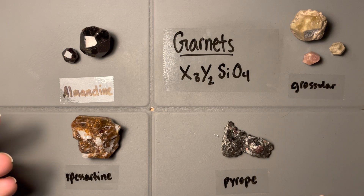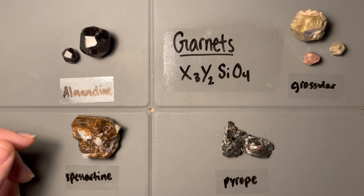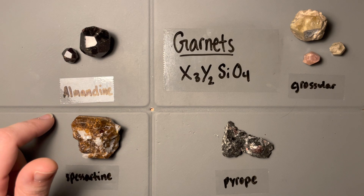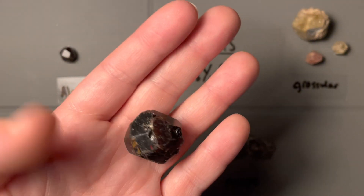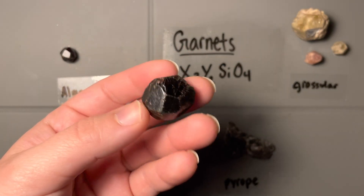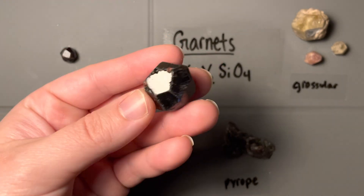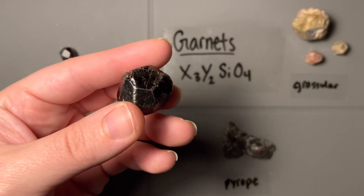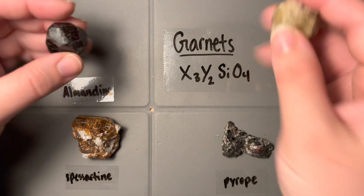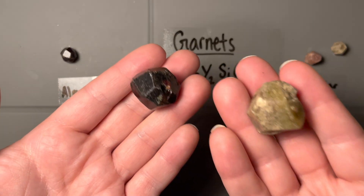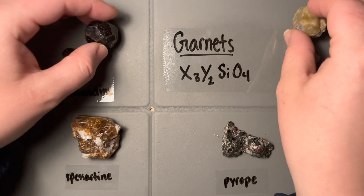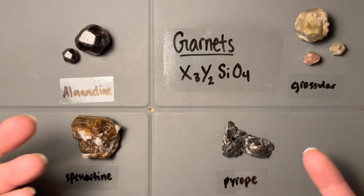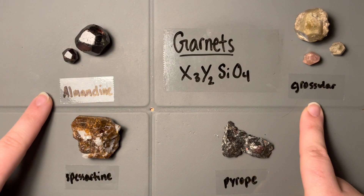Those subtle differences aren't something we can tell just from hand sample work or a mineral test. So they're all pretty hard, vitreous luster, great euhedral crystals, and moderately dense. This one especially, being the iron end member, is noticeably more dense — I can physically feel the difference in my hand compared to the grossular over here. That could be one way to tell them apart.